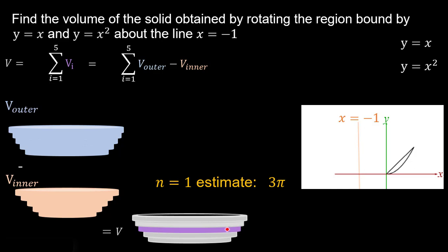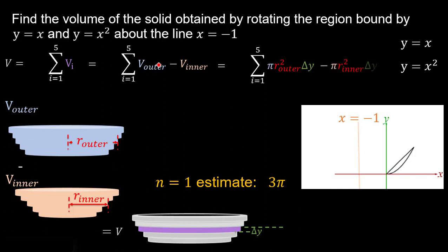Let's define parameters for our purple washer. The thickness is delta Y. The outer radius is R sub outer and the inner radius is R sub inner. Our V outer becomes pi times R outer squared times delta Y — the area of the outer disk times the thickness — and we subtract pi times R inner squared times delta Y. Now we need to define R outer and R inner, which is the most difficult part of this problem.